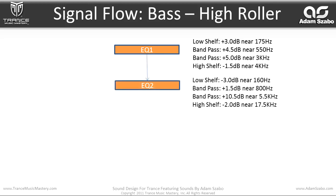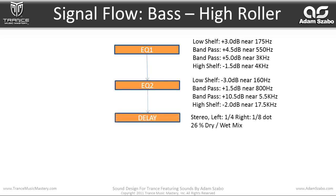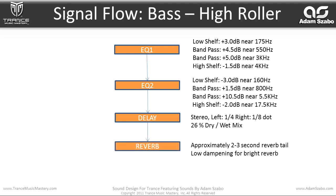Then it flows through a second EQ with a minus 3dB low shelf near 160Hz, a plus 1.5dB boost near 800Hz, a plus 10.5dB boost near 5.5kHz, and a high shelf cut of 2dB near 17.5kHz. That flows into a stereo delay with a left time of one quarter note, right time of one eighth dotted note, mixed at 26% dry/wet. Then a reverb with approximately a two-to-three second tail with low dampening for a bright reverb sound. That's it for the sound map — let's program the patch.